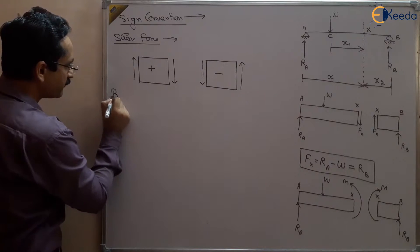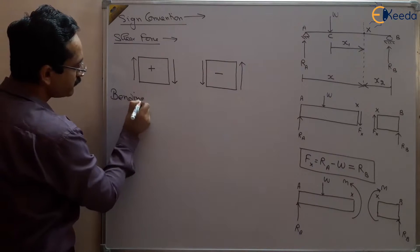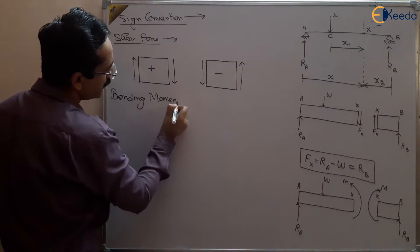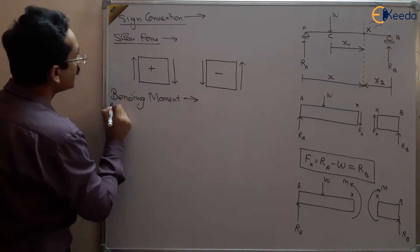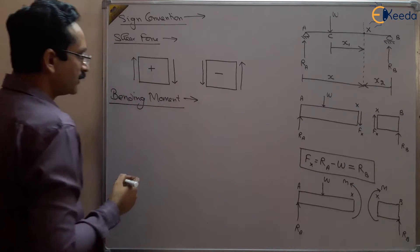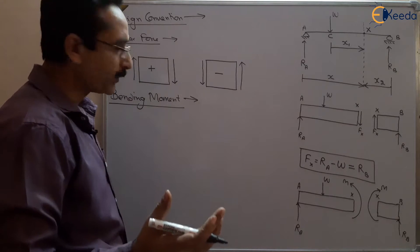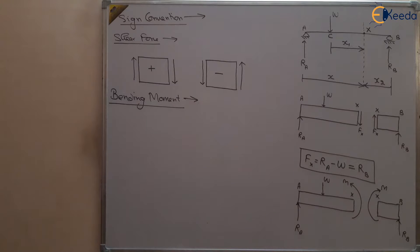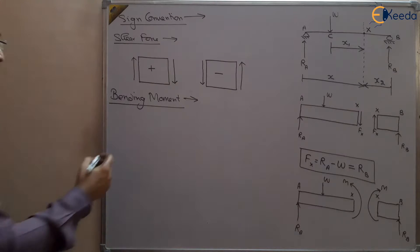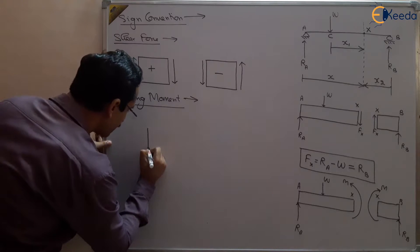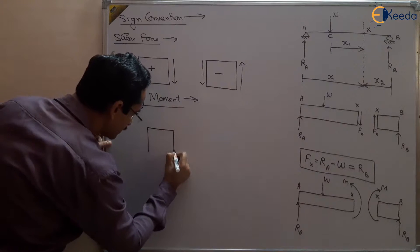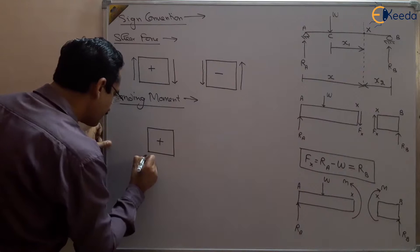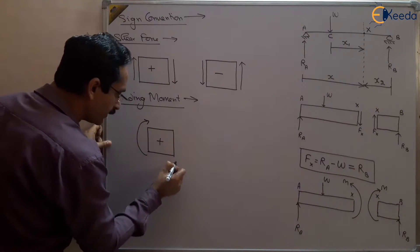Now, sign convention for bending moment. There will be two types of bending moments: sagging and hogging. For sagging bending moment, in our calculation we will take it as positive. This is our sagging bending moment.